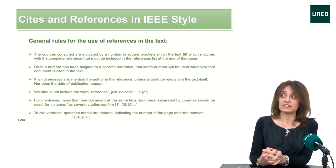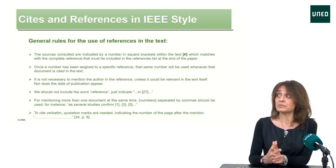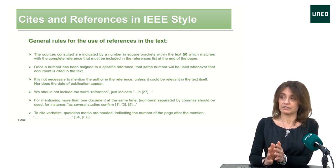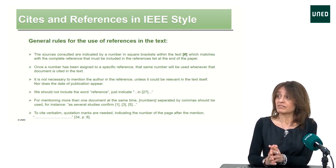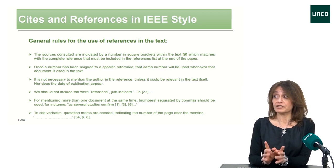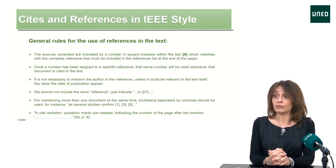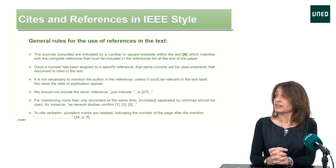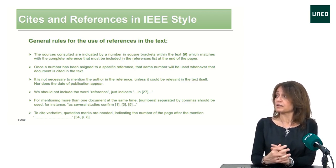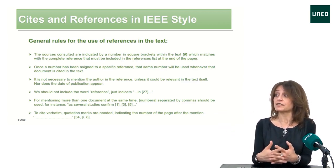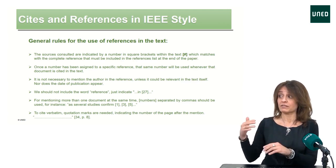Once a number has been assigned to a specific reference, that same number will be used whenever that document is cited in the text. It is not necessary to mention the author in the reference unless it could be relevant in the text itself, nor does the date of publication appear. We should not include the word 'reference,' just indicate the number. For mentioning more than one document at the same time, numbers in square brackets separated by commas should be used, like in this example: 'as several studies confirm [1, 3, 5],' etc.